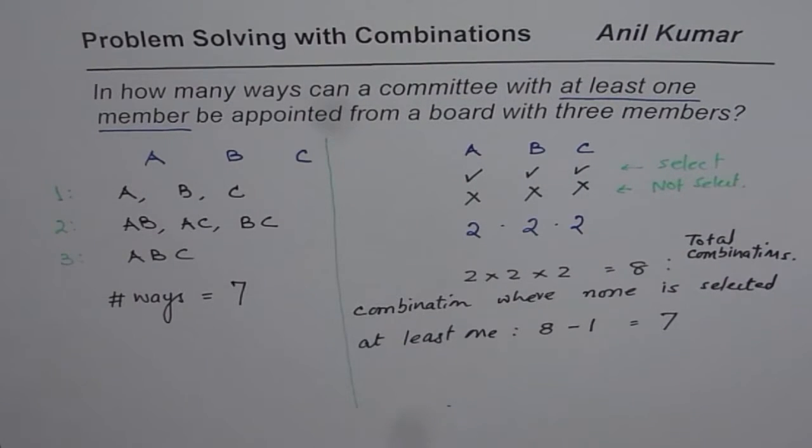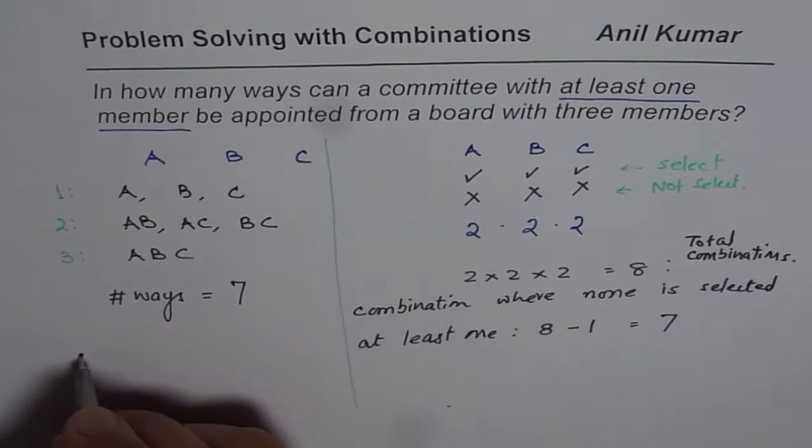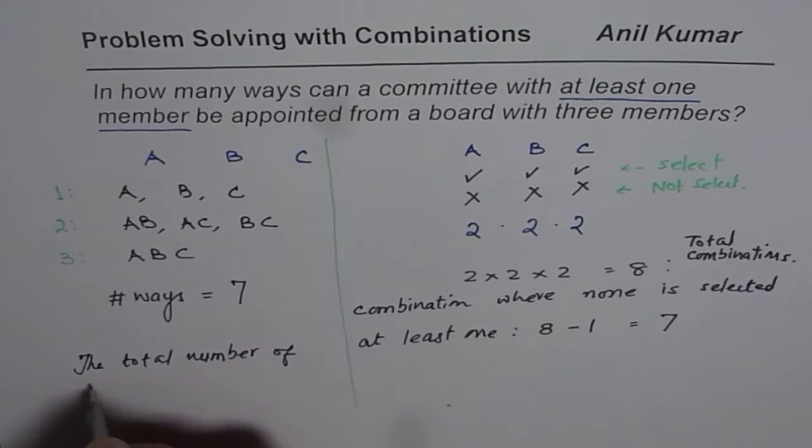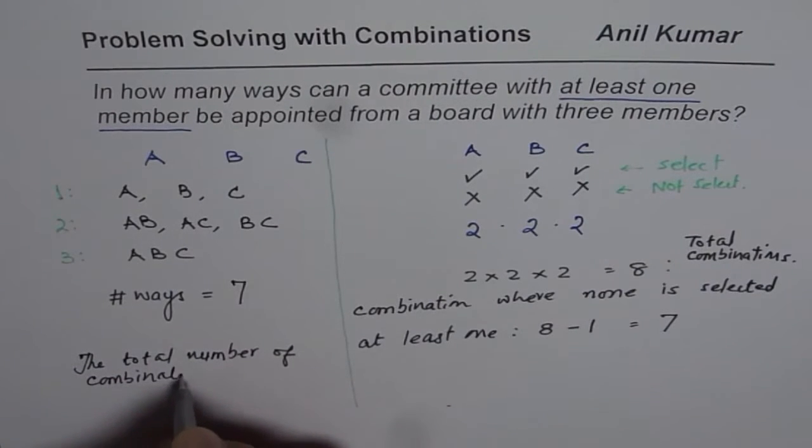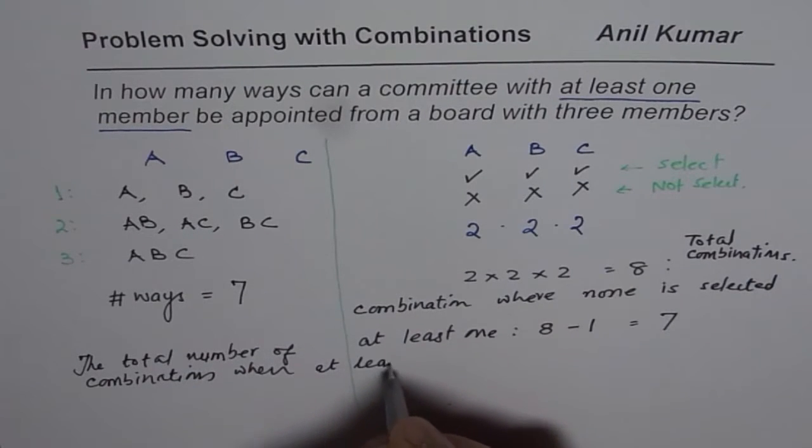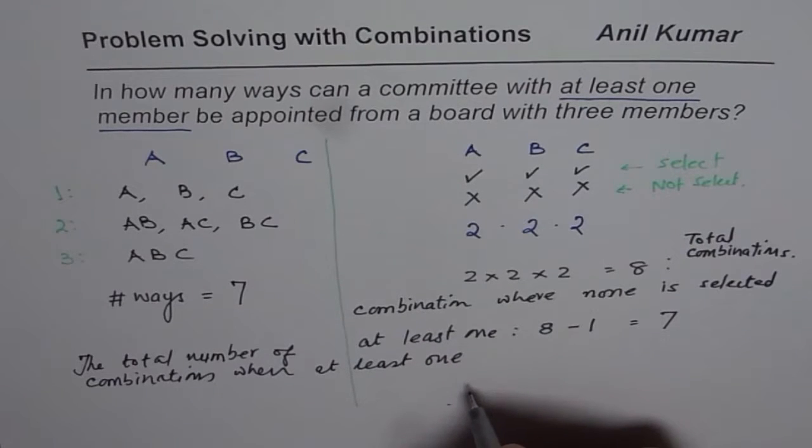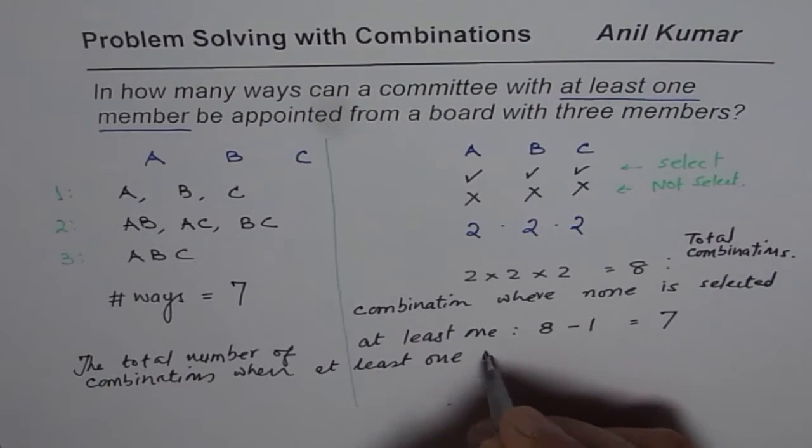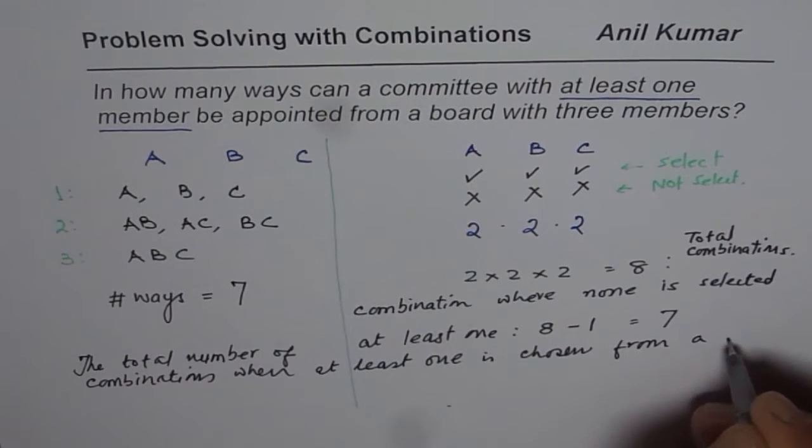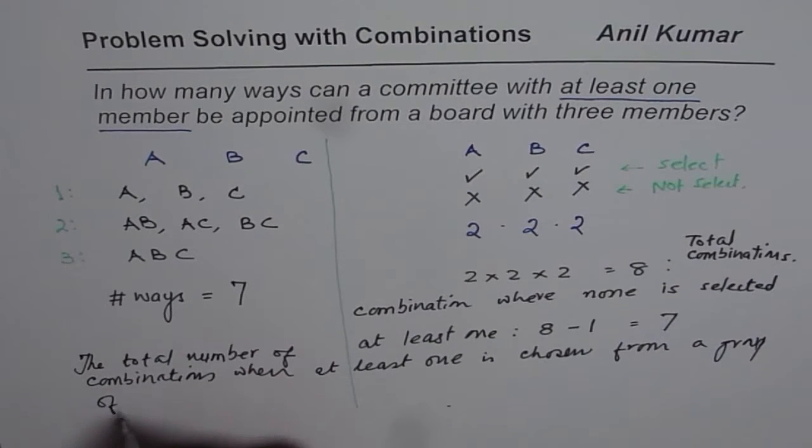So in general, what we can say, that the total number of combinations containing at least, so we can now write this as, that the total number of combinations